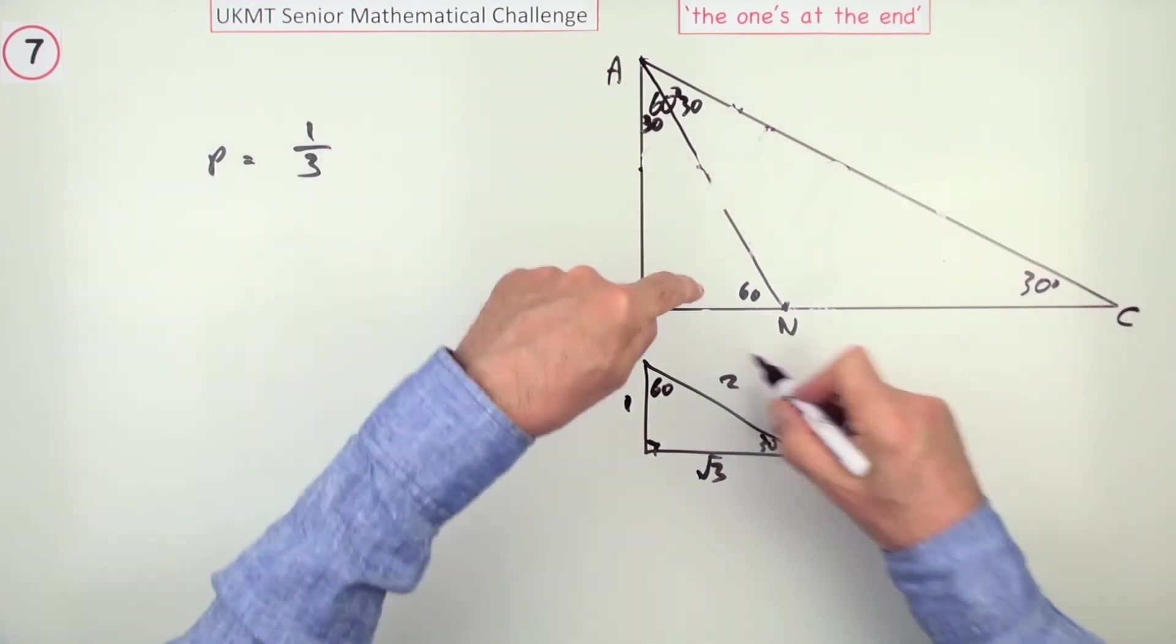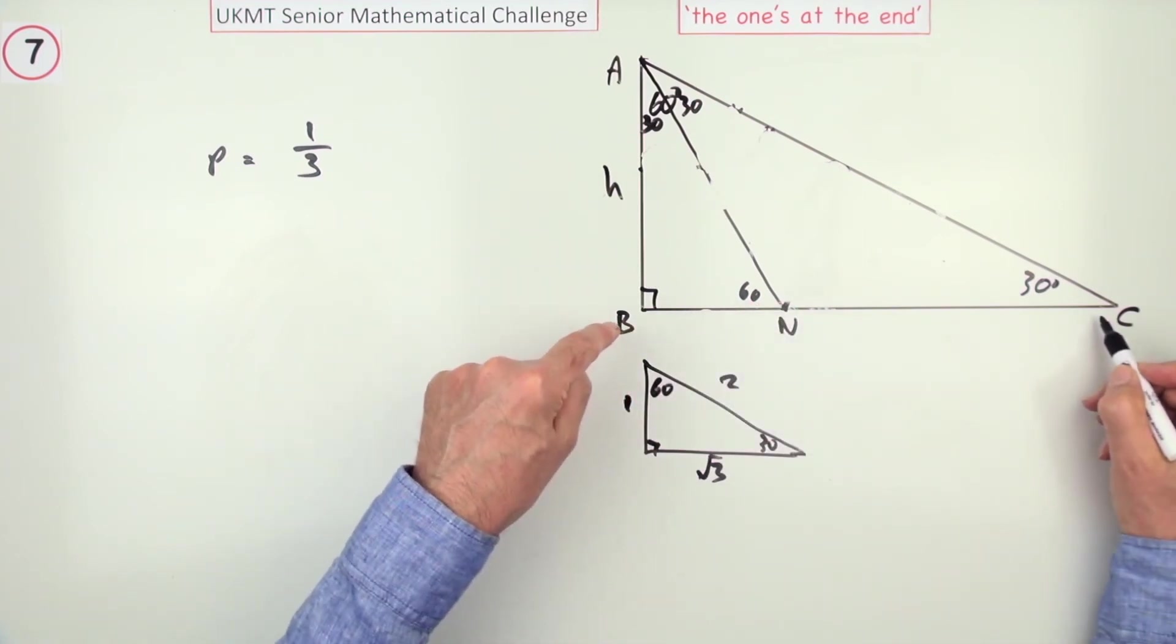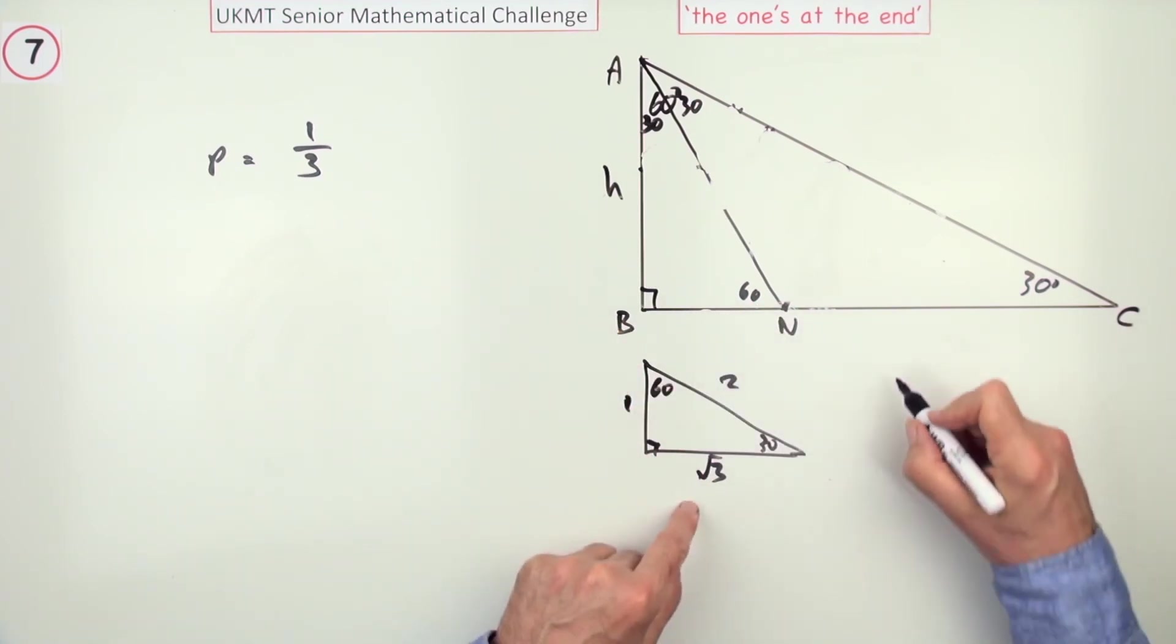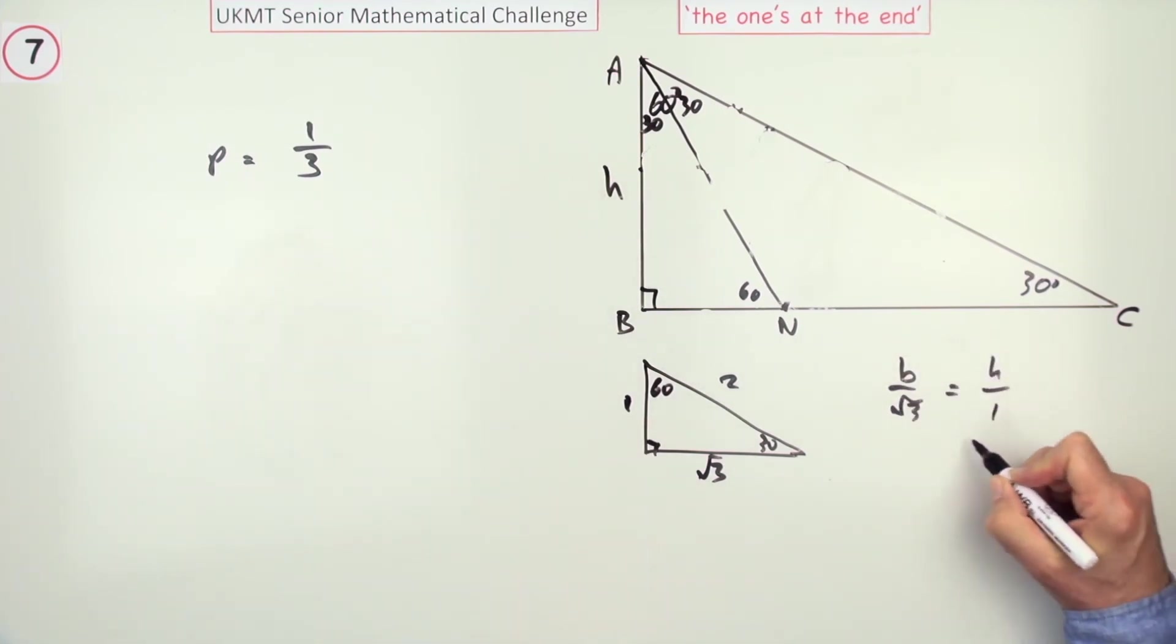So, taking the whole triangle, if you call that side H, then the base of it will be root 3 times it. As in, the base over root 3 is the same as the height over 1, so the base would be root 3 H.